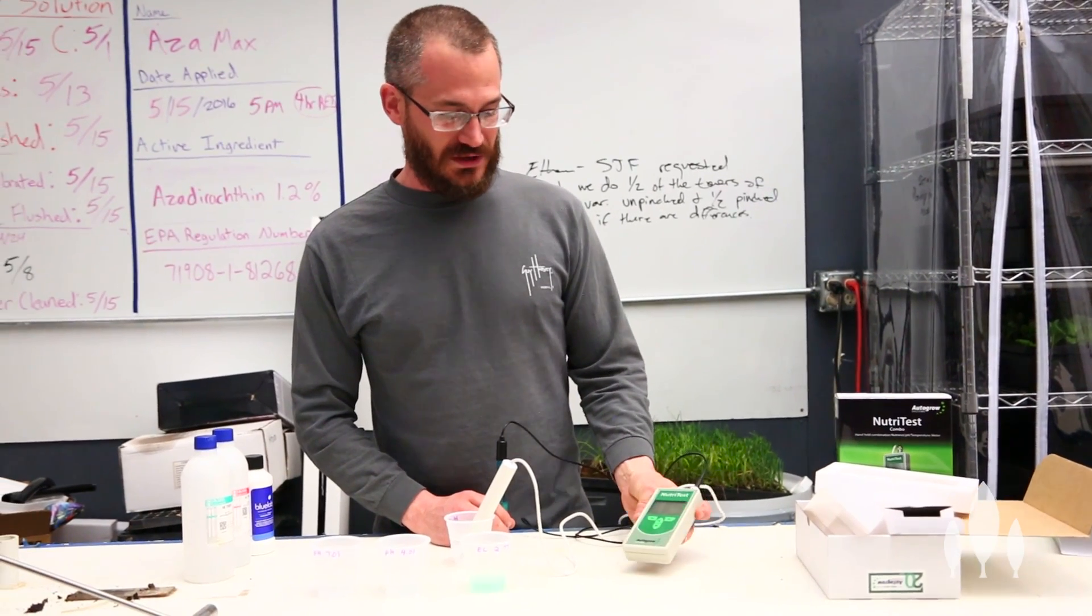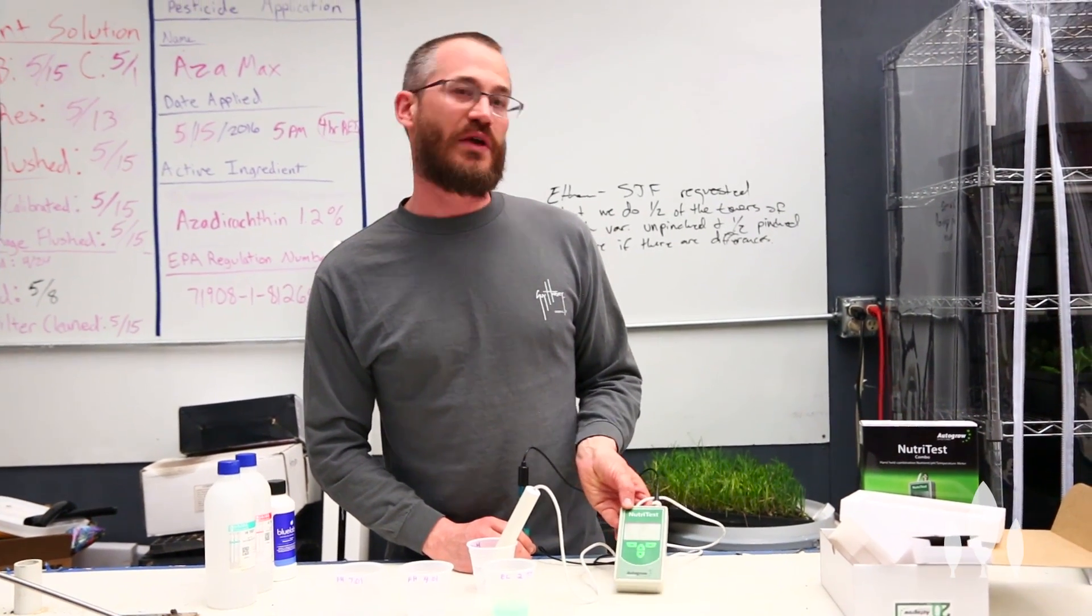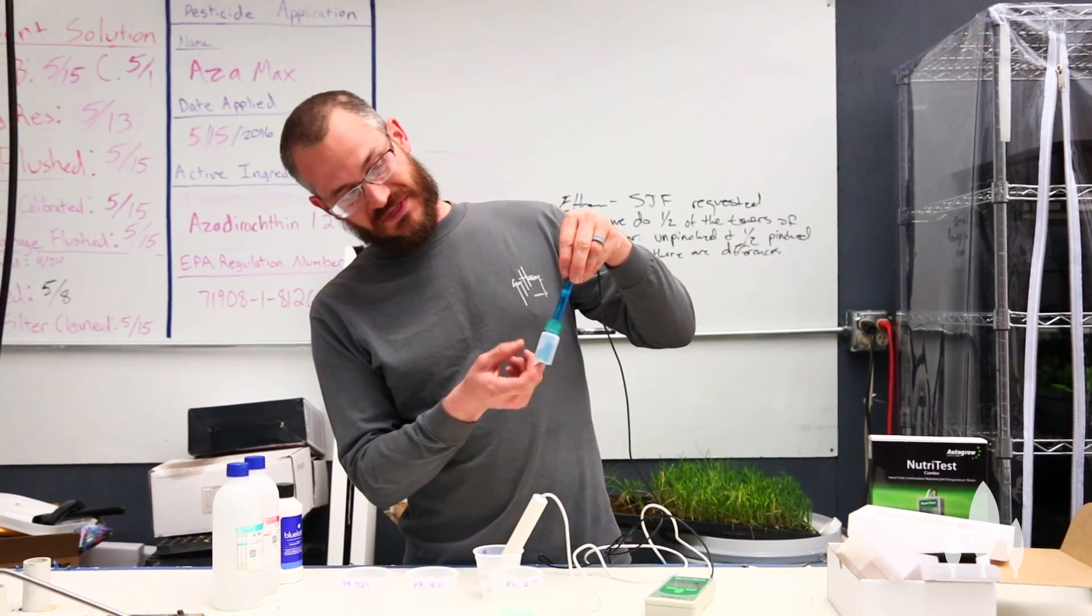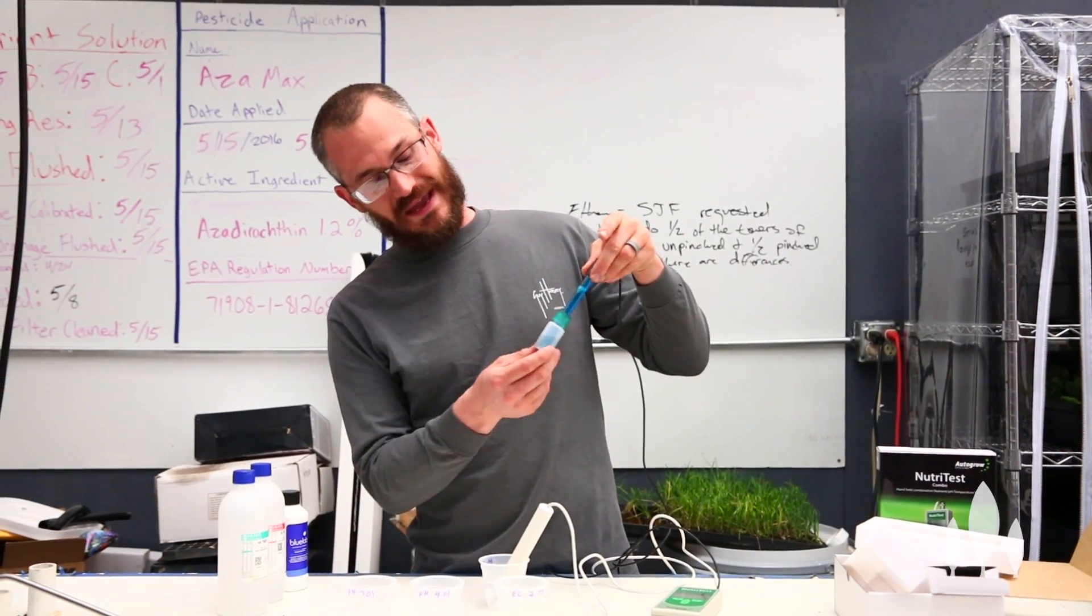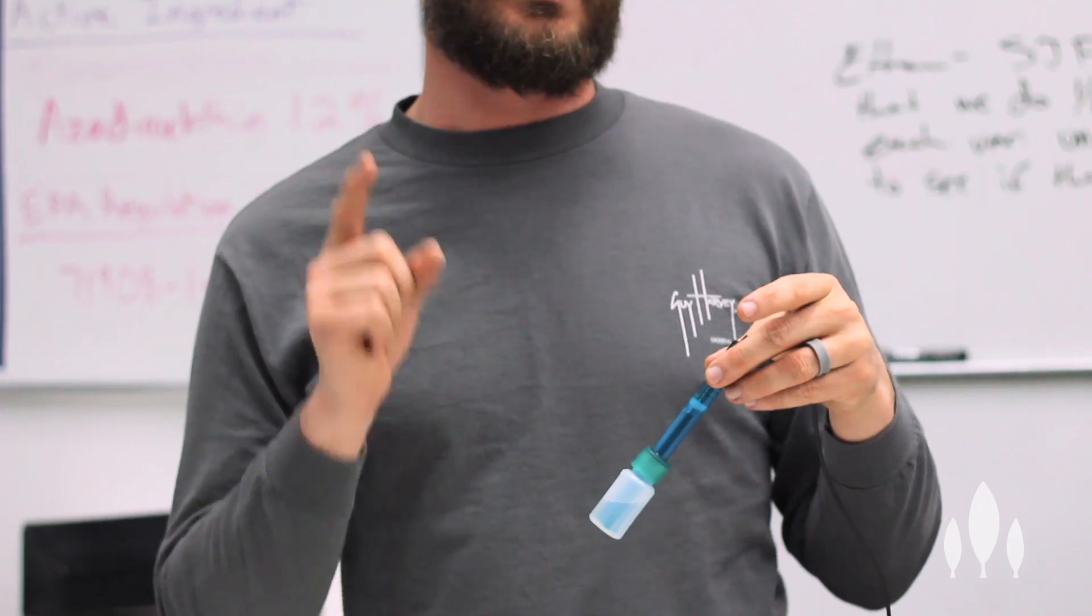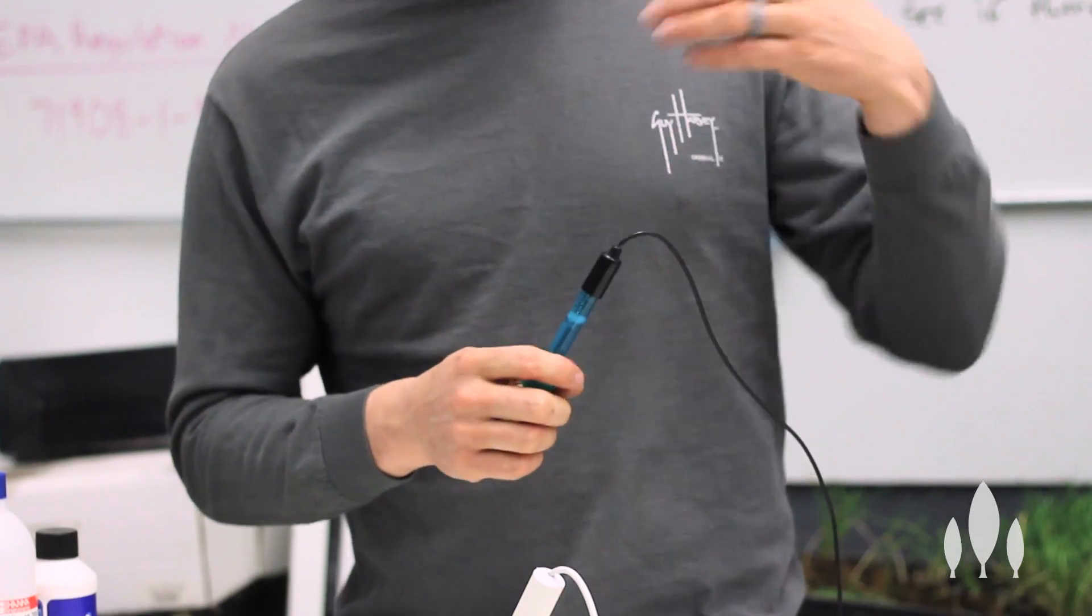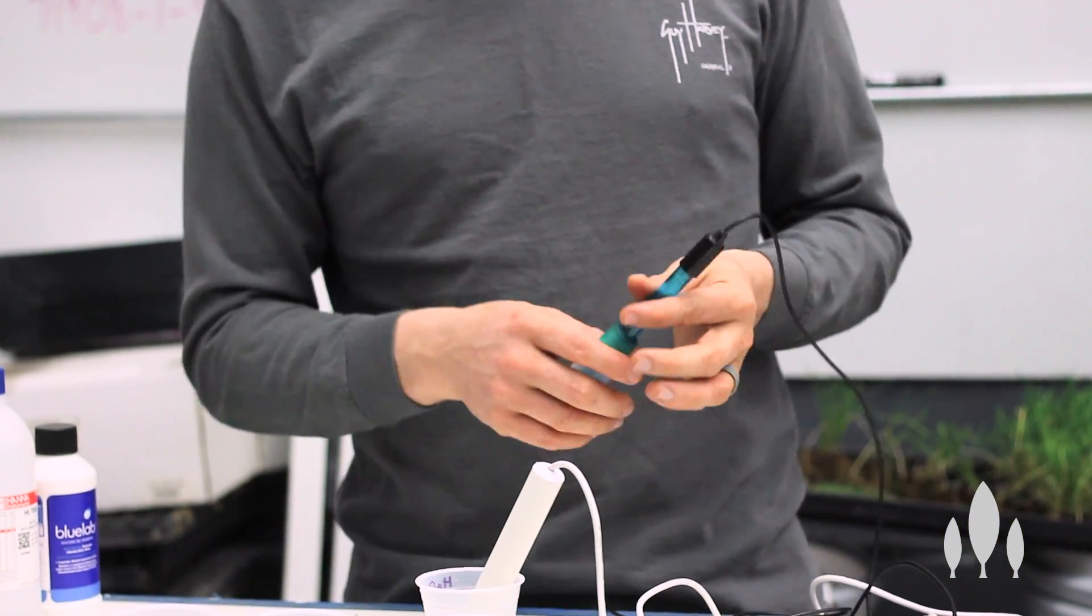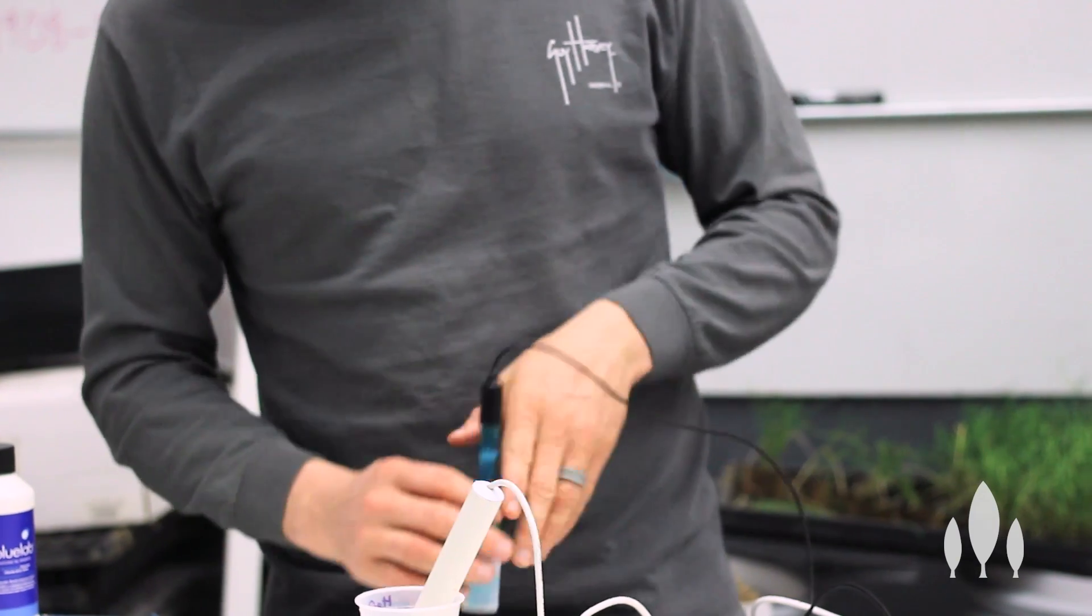And then you're going to start getting readings right out of the gate. And so what you want to do with this is, to start, you want to calibrate it. So, these probes, they'll come like this. This pH probe will be in a little vial of solution. That's because it cannot dry out. You cannot let your pH probe dry out. If it dries out, it gets ruined. It won't ever measure correctly again. You're going to have to throw it away and buy a new $50 probe or what have you.